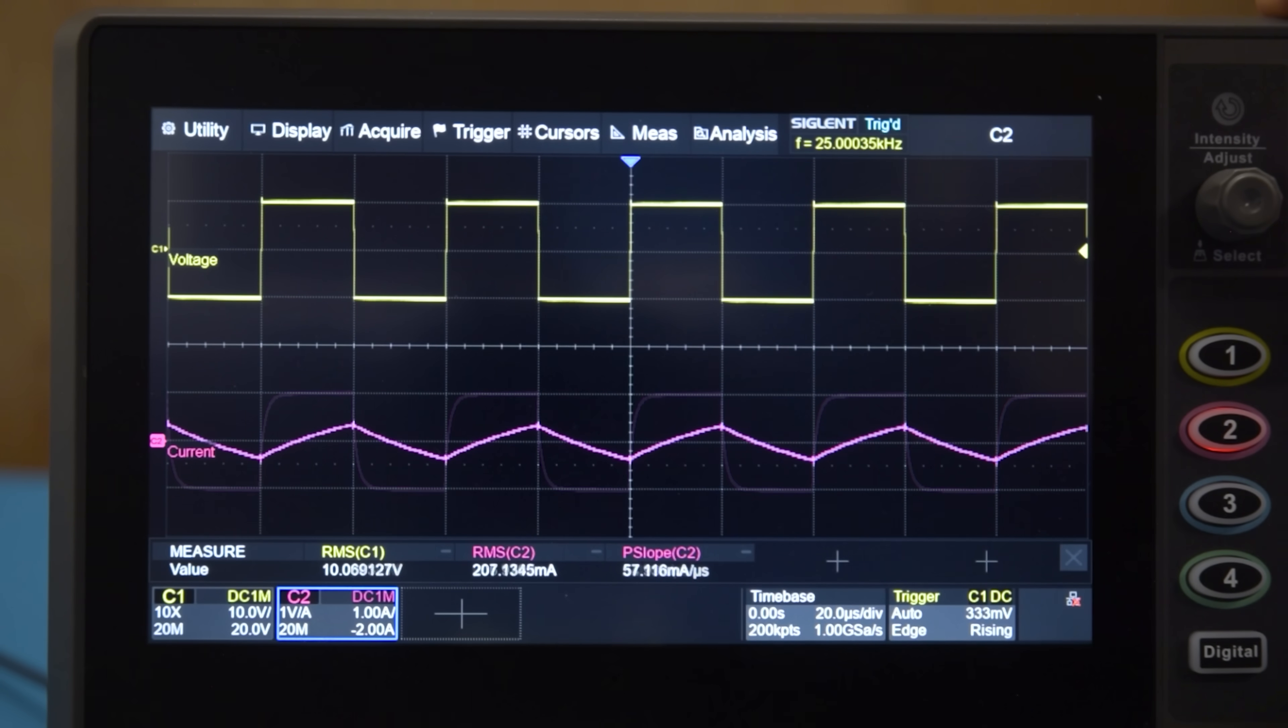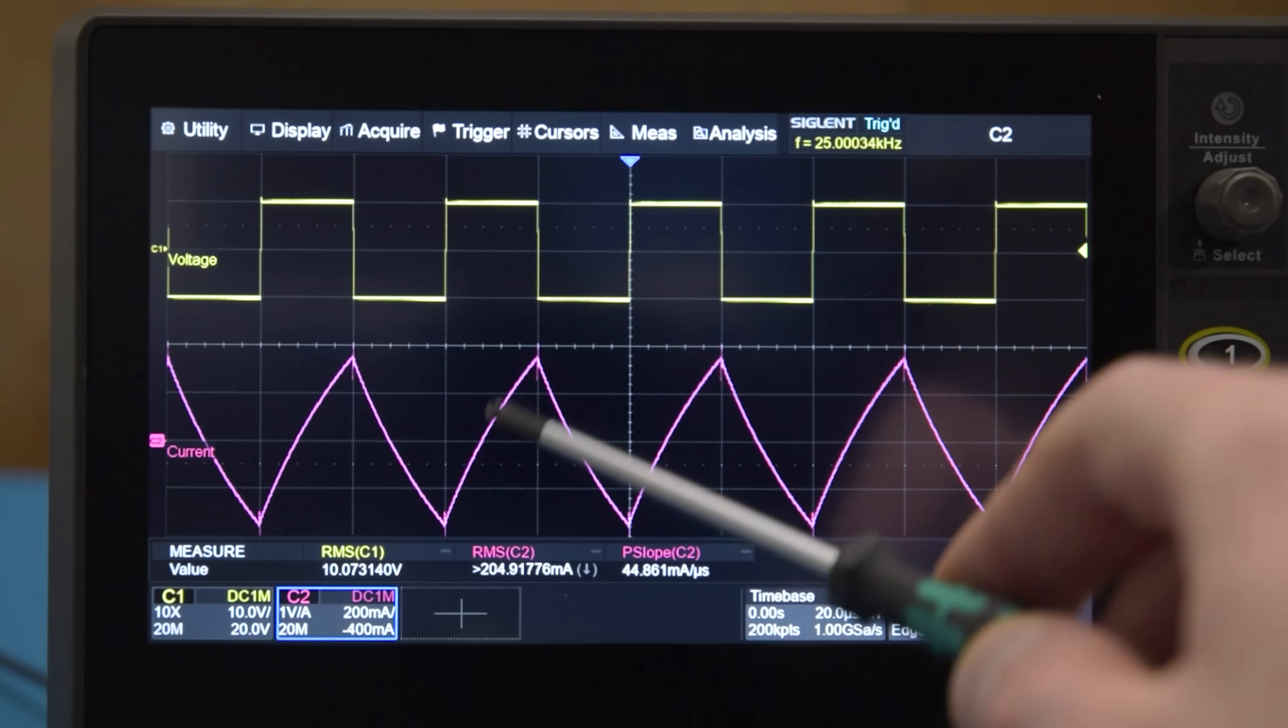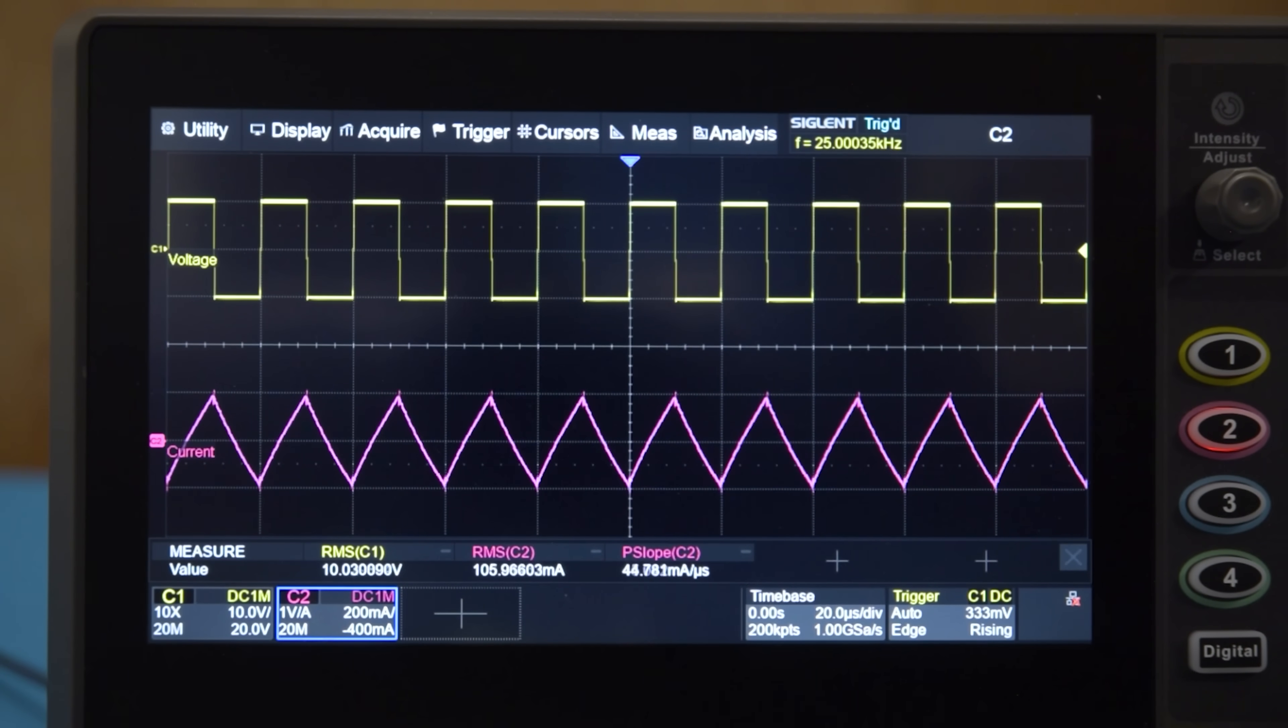If we add a lot more inductance, the current can't even reach its steady state value before the voltage changes, and the waveform becomes triangular, with its amplitude no longer determined by the resistance, but instead by the inductance. When this is the case, increasing the frequency also reduces the current, as there's less time for it to change and try to catch up with the voltage.